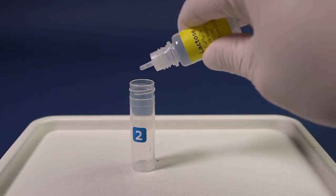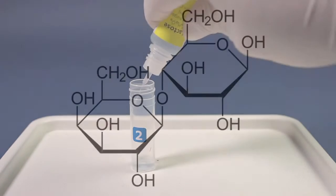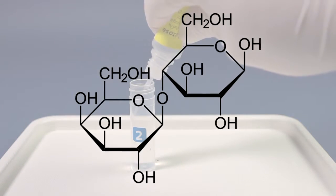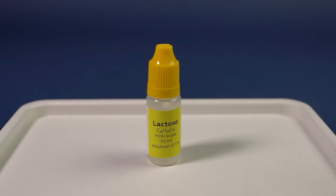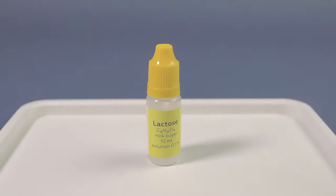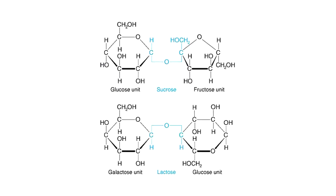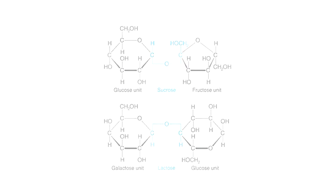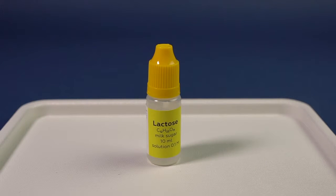Pour lactose solution into the second vial. Its molecule consists of glucose and galactose. Because of its structure, lactose can reduce other substances, and therefore it is called a reducing sugar, so it can react with copper compounds under basic conditions.